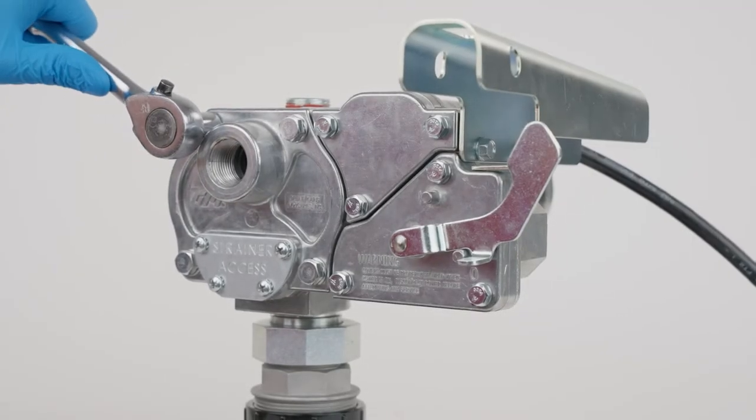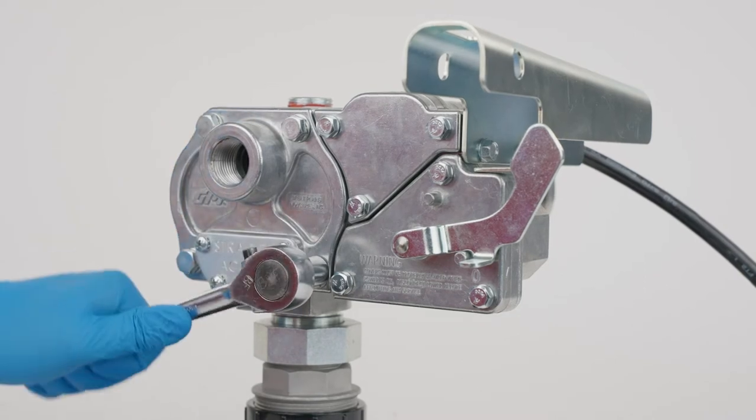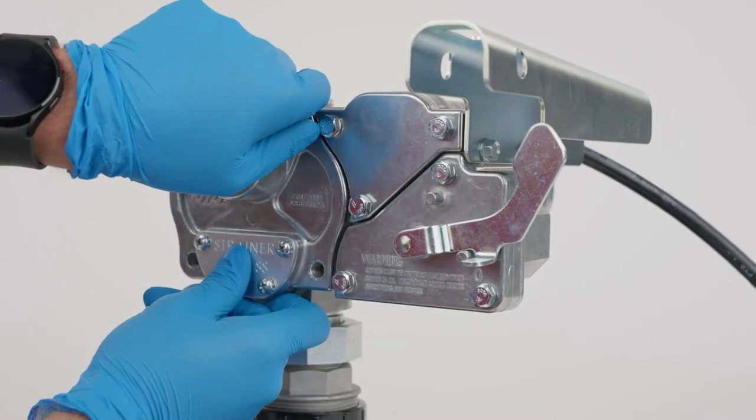Use a socket wrench to remove the gear cover plate and o-ring from the pump housing, then pull the drive key and gears from the pump.